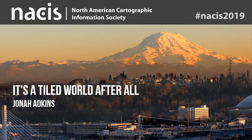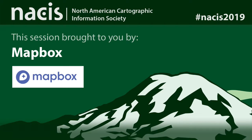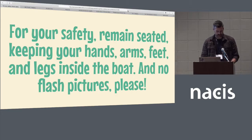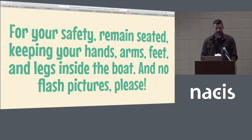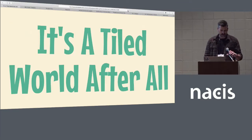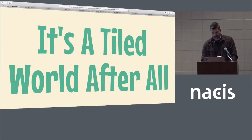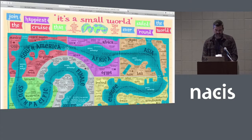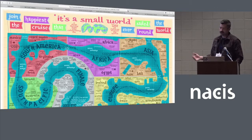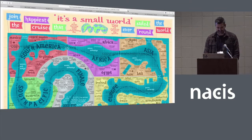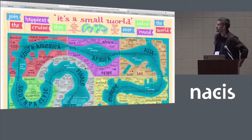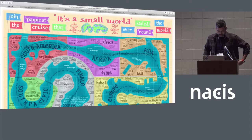Quick disclaimer before you get on any slow-moving boat ride. If you know me, you know I wouldn't miss a chance to theme a talk after something at Disney — that's kind of my bag. We're going to talk about vector tiles. If you were hoping for a Disney map-themed talk, here's the 'It's a Small World' ride laid out on a Mercator map I did a couple years ago. With a room full of cartographers, we could talk about how geographically problematic this is, but we'll just move on.